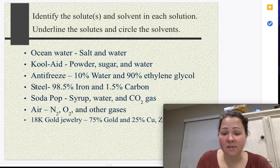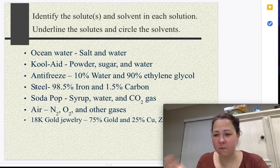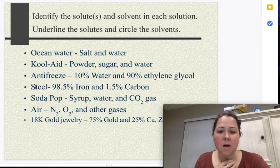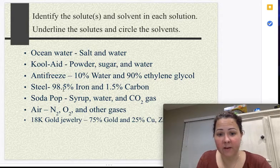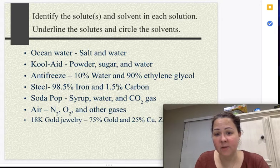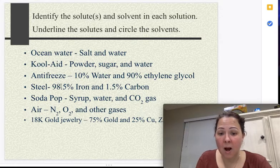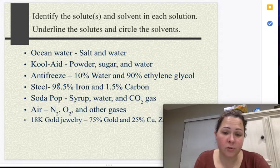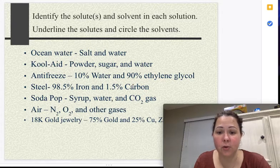Steel, this is a solid. When it's all done, you have to mix it in the liquid state. But when it's all done, it's 98.5% iron, 1.5% carbon. There is more iron than carbon. So that means that your iron is your solvent. Carbon is your solute.